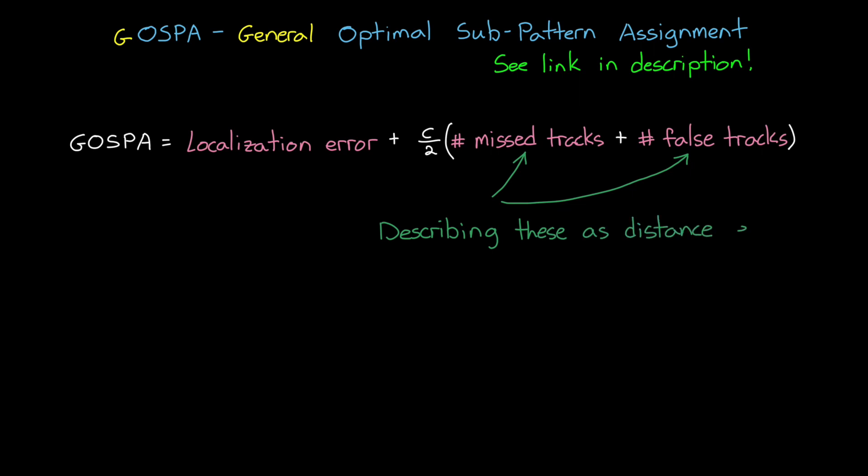This is what GOSPA reduces to for parameters alpha equals 2 and p equals 1, which aren't important in this video, but the reference in the description explains all of it. The bottom line is that by describing missed and false tracks as a distance error, there are ways to combine them with localization distance error and arrive at a single metric that we can use to assess tracking performance or to set a requirement for the tracking system. Again, there's plenty of other metrics that we would want to look at for a tracking system. For example, how long it takes to establish a new track when an object enters the local environment, or how long it takes to delete a track when an object leaves. And just like with everything I'm talking about here, I've left some resources where you can find more information on tracking metrics. There's always more information.